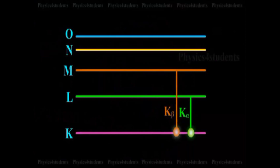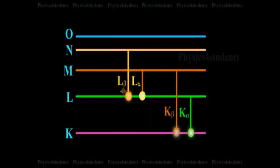If an electron jumps from M-shell to the vacant state in L-shell, it contributes L-alpha line, and if the vacancy in L-shell is filled up by an electron of N-shell, it contributes L-beta and so on.